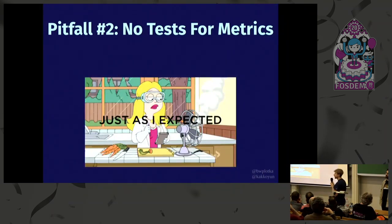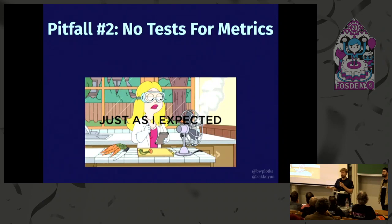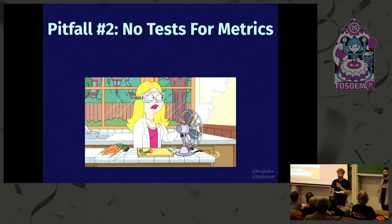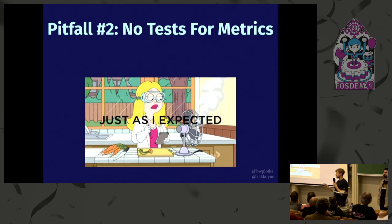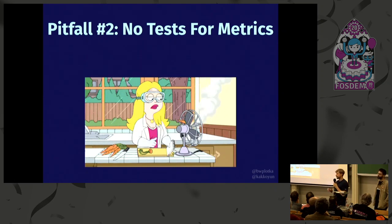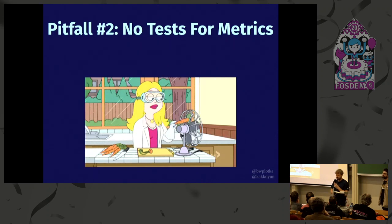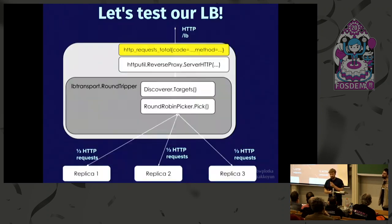Pitfall number two: no tests. Metrics and other observability signals like tracing and logs are almost never tested. Who tests a log line to verify it's logged at the right moment with the right message? Usually nobody, because log lines are for humans to read. However, for metrics I would argue it's really important to test reliability. You depend on metrics so much that you should actually test them. Let me show you why.